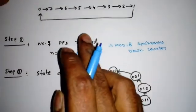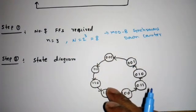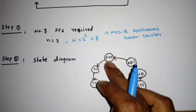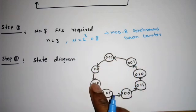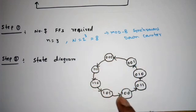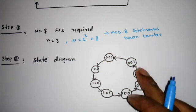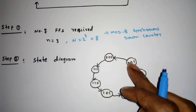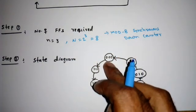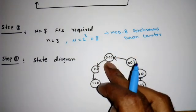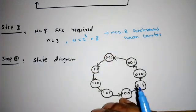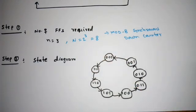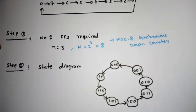The next step is the state diagram. Starting from triple zero, the next state is triple one, then 110, 101, 100, 011, 010, 001, and after 001 it comes back to zero again. That's why it is called a modulus 8 synchronous down counter.